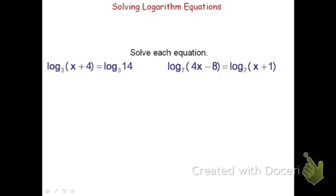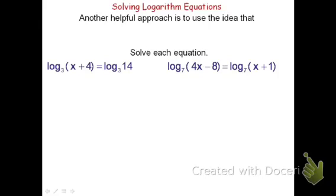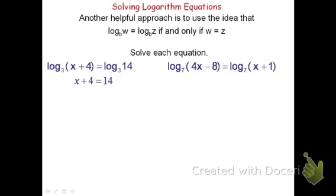Now let's look at another type of example where log equals log. If log base b of w equals log base b of z — two logs with the same base that are equal — the only way this is possible is if the arguments w and z are also equal. Applying this to the first problem: log base 3 of (x+4) equals log base 3 of 14, so x plus 4 equals 14, giving x equals 10.